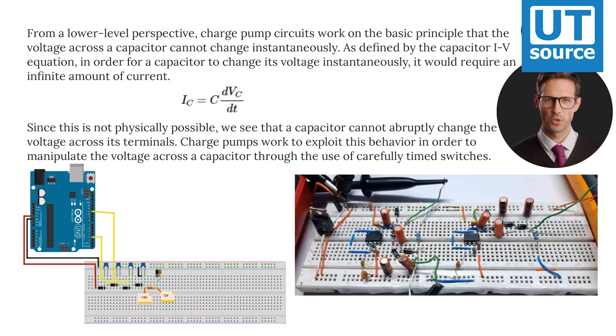From a lower level perspective, charge pump circuits work on the basic principle that the voltage across a capacitor cannot change instantaneously. As defined by the capacitor IV equation, in order for a capacitor to change its voltage instantaneously, it would require an infinite amount of current.